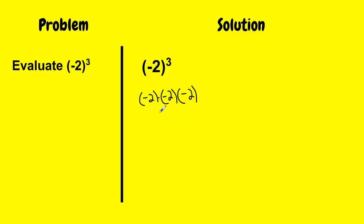So I multiply negative 2 times negative 2. That gives me positive 4. And then I have to multiply it with one more negative 2. 4 times negative 2, which is a positive times a negative is a negative. And 4 times 2 is 8. So negative 2 to the 3rd power gives me negative 8.